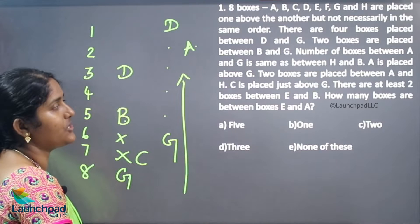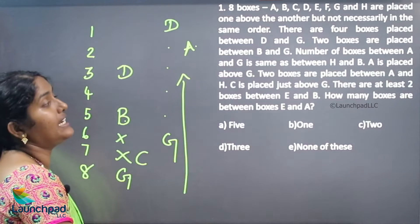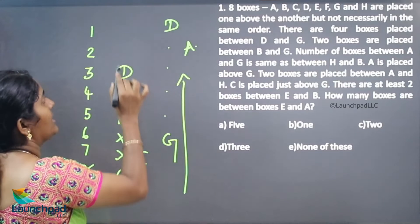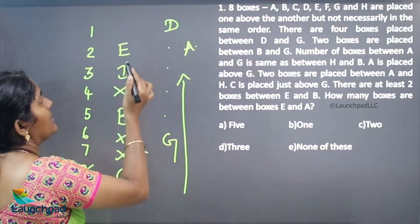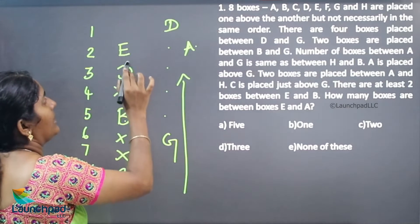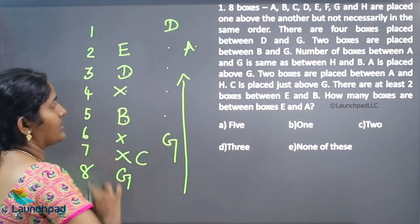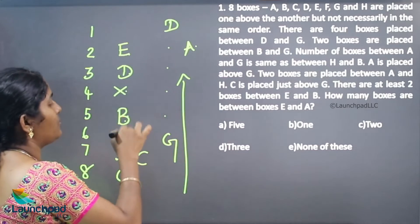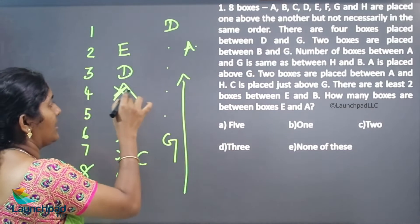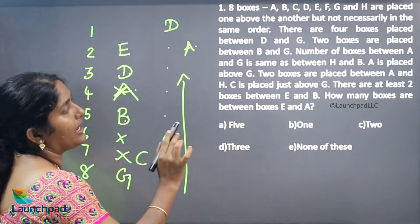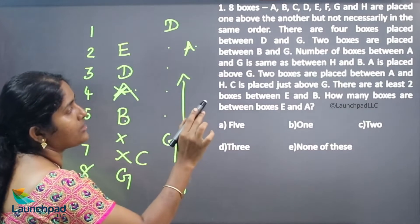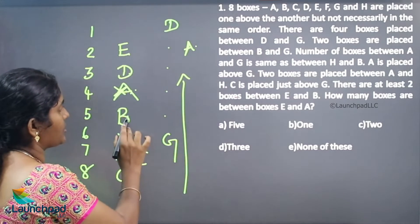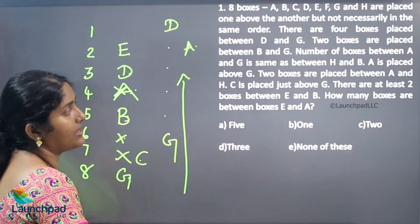There are at least 2 boxes between E and B. So E will be placed such that there are 2 boxes between E and B. One more point: A is placed above G, so A is coming here. And there are 3 boxes between A and G — 1, 2, 3.